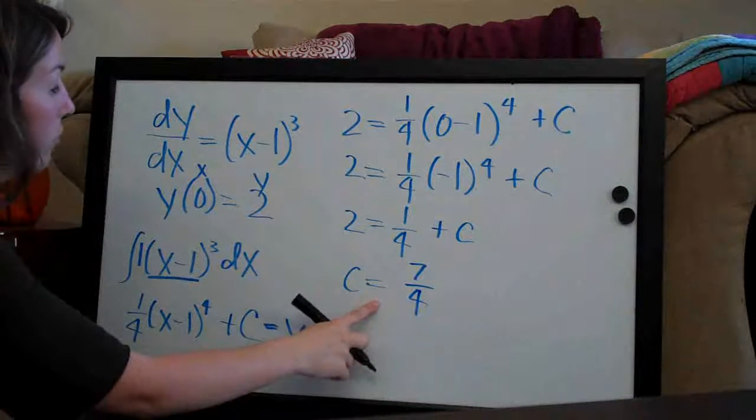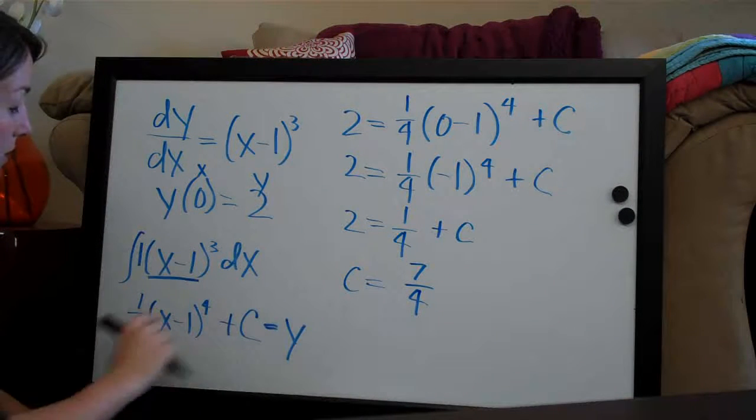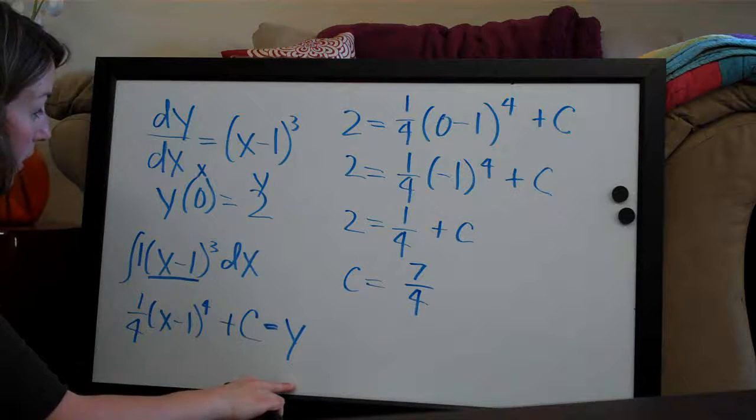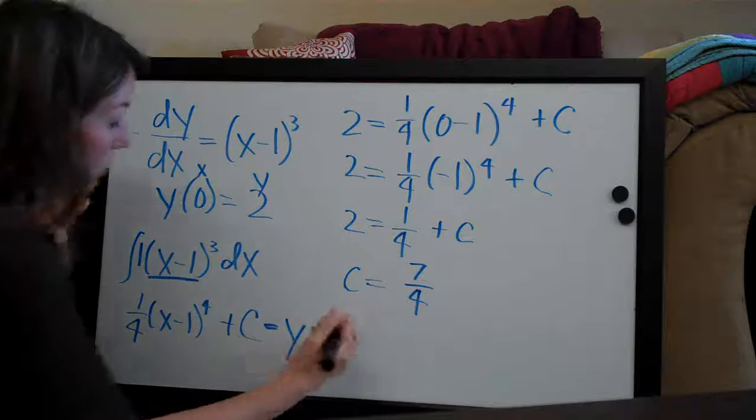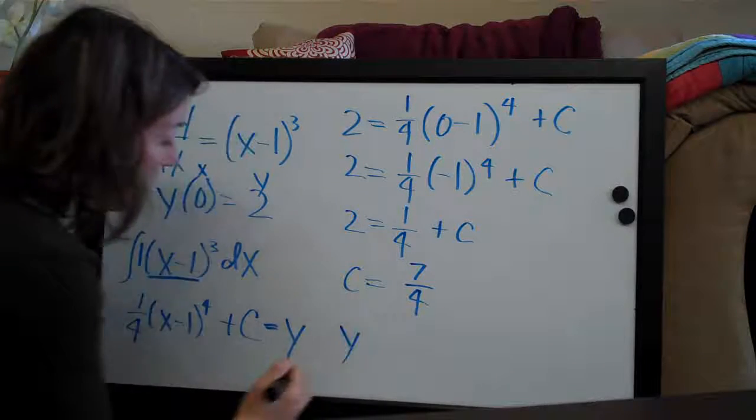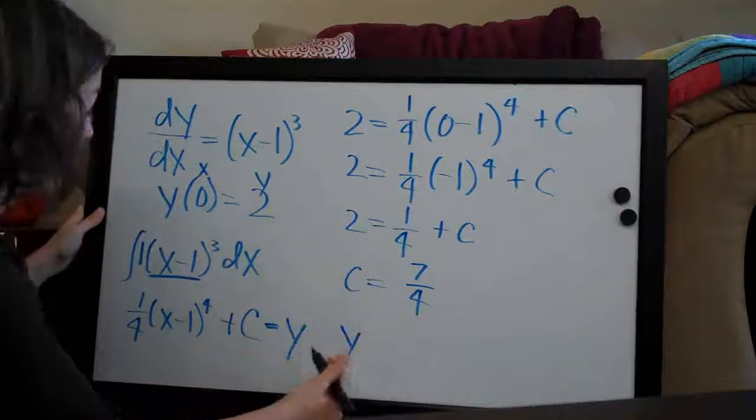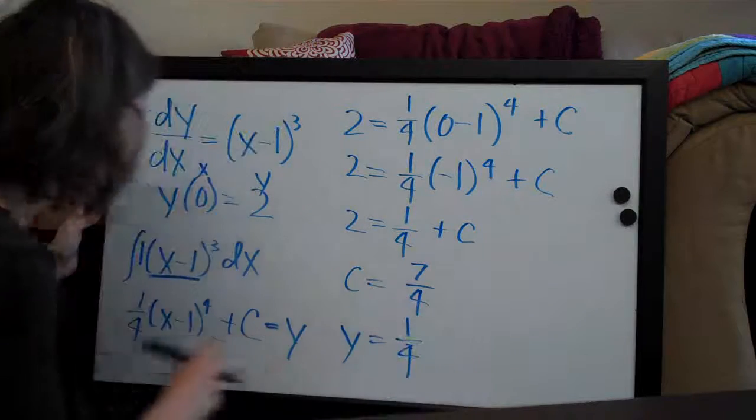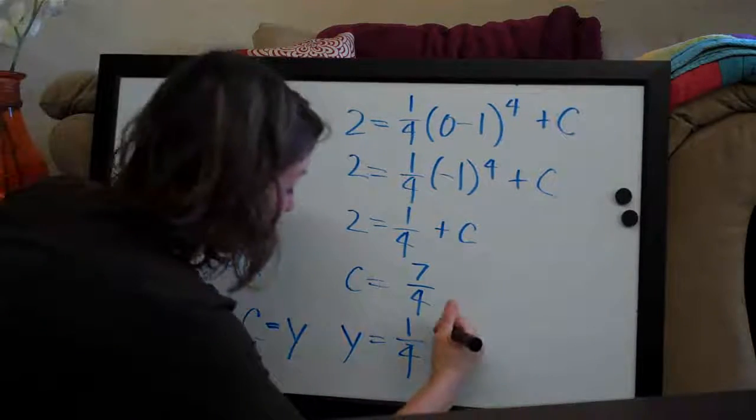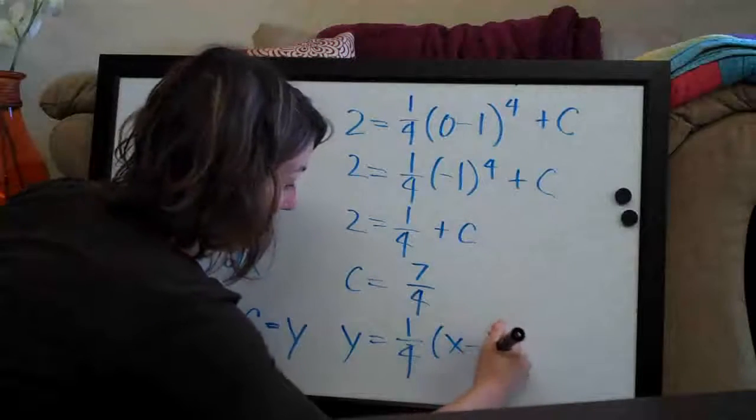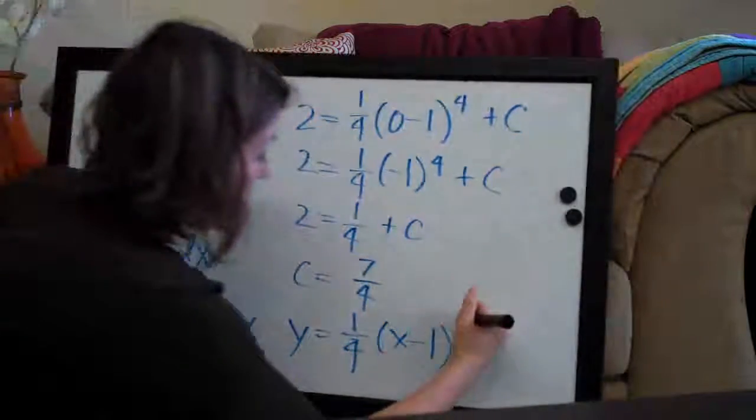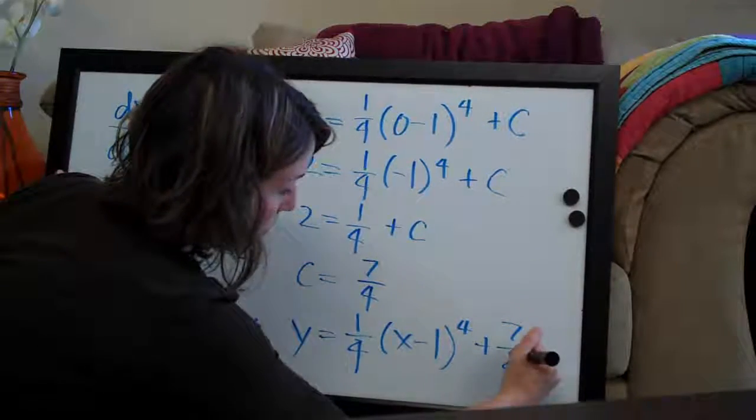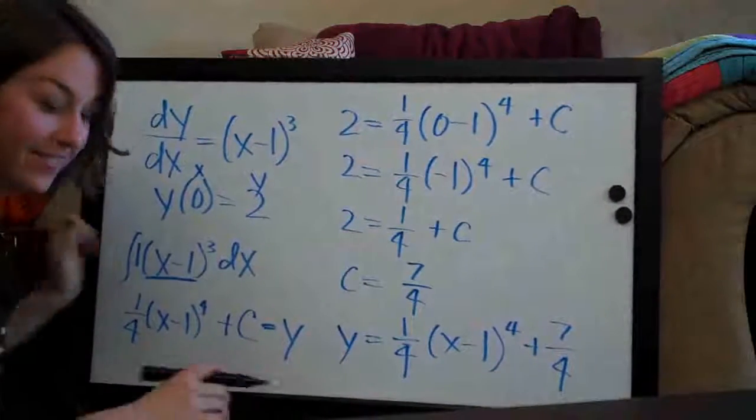So we've solved for c, and then the last thing we have to do is plug c back into our function that we got after we integrated. So we have y equals, that stays the same, all we're doing is plugging back in for c. So y = 1/4(x-1)⁴ + 7/4. And that's the final answer.